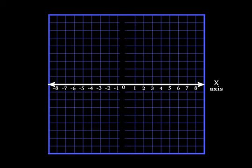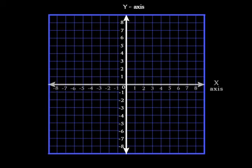The number lines are named x-axis and y-axis. Together, both lines are called axes.